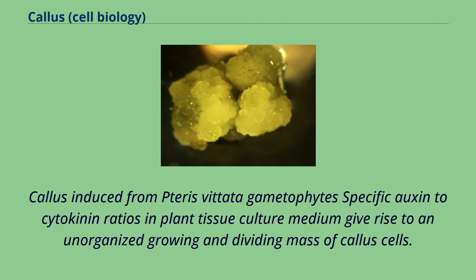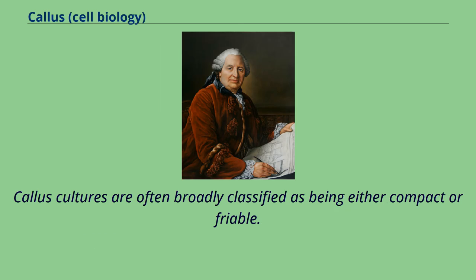Specific auxin to cytokinin ratios in plant tissue culture medium give rise to an unorganized, growing and dividing mass of callus cells. Callus cultures are often broadly classified as being either compact or friable.